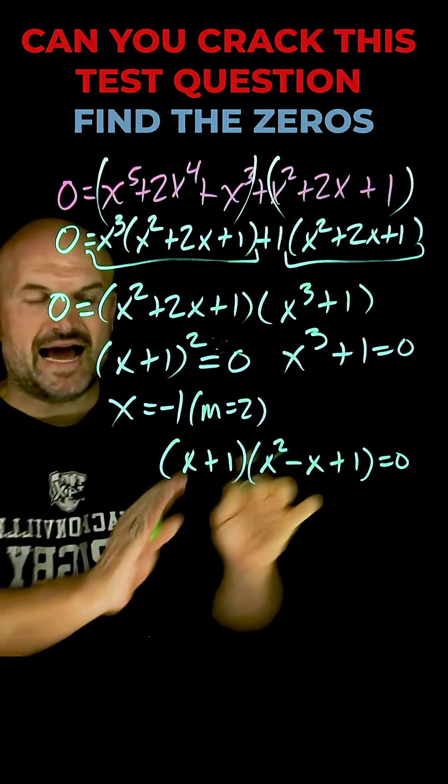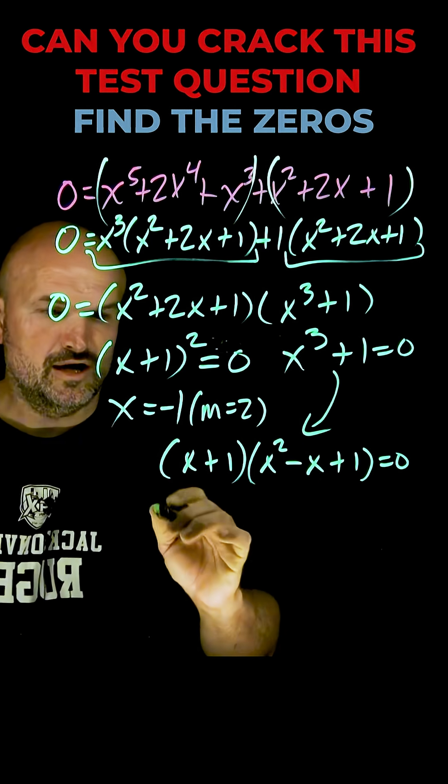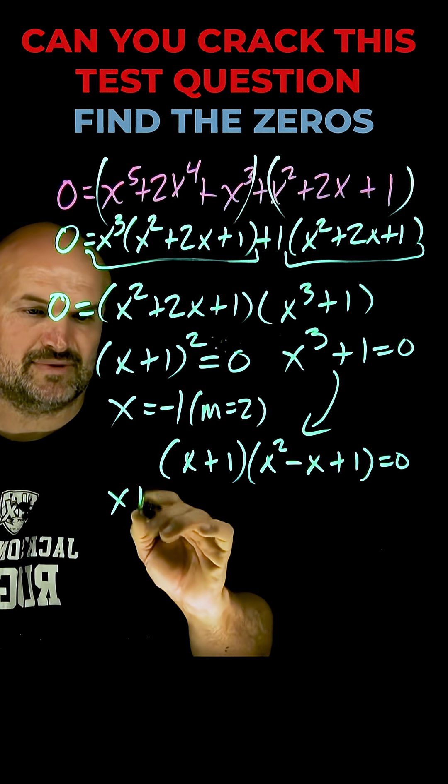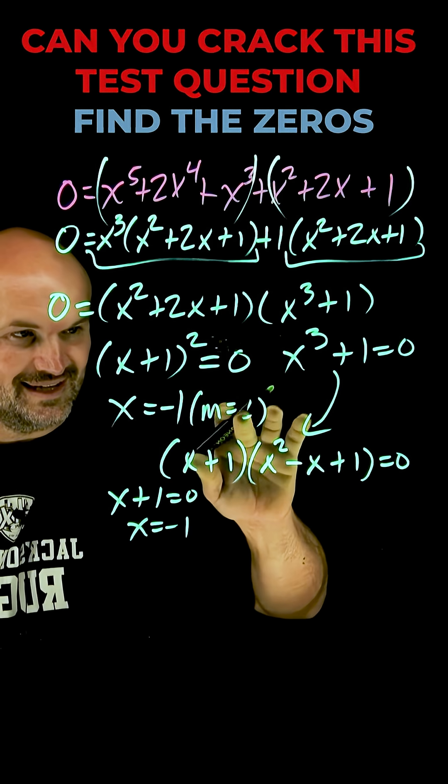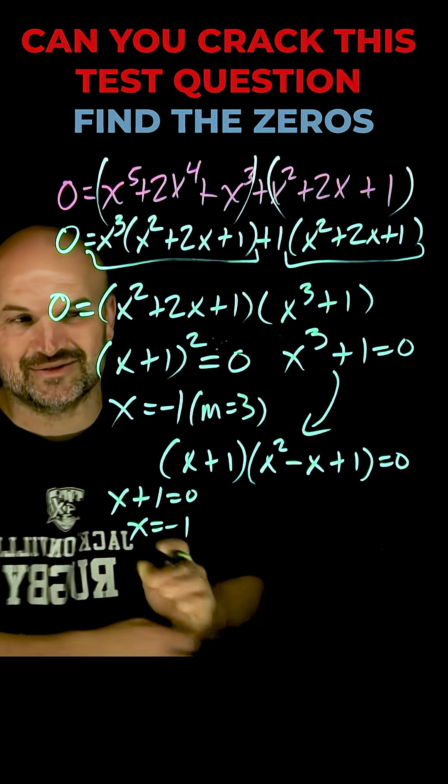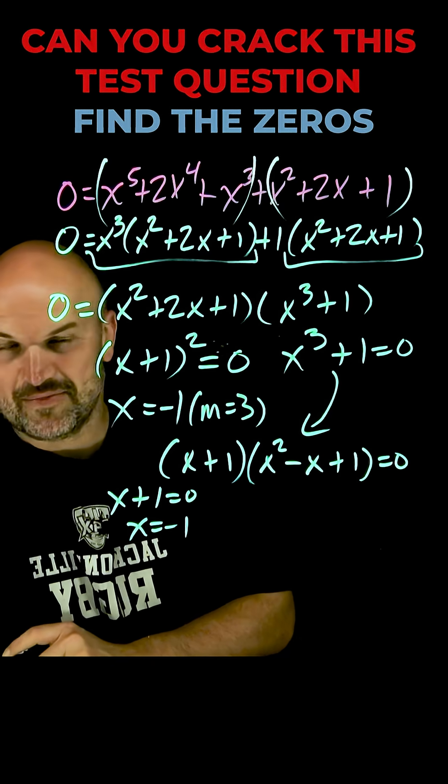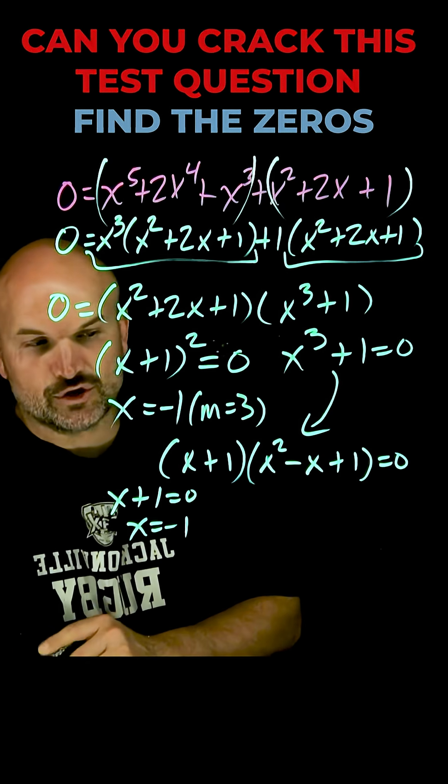Okay so now by factoring this difference of two cubes over here we know that x plus 1 is equal to 0 so x equals negative 1. That's interesting. Now we have 3 x equals negative 1, so the multiplicity is 3. Over here though we have to go ahead and use the quadratic formula.